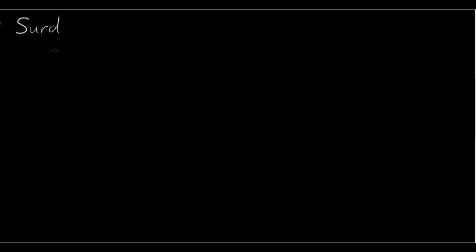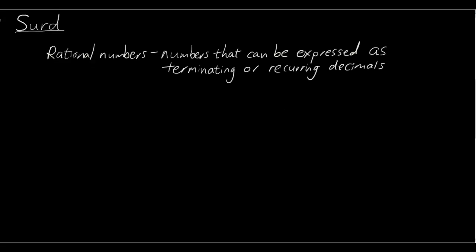That is a very good question. Basically, before we understand what surds are, let's define what are rational numbers and irrational numbers. So, let's define rational numbers as numbers that can be expressed as terminating or recurring decimals. So, what does that mean?